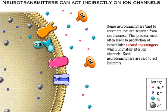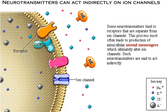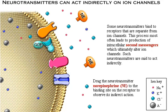Some neurotransmitters bind to receptors that are separate from ion channels. This process most often leads to production of intracellular second messengers, which ultimately alter ion channels. Such neurotransmitters are said to act indirectly. Drag the neurotransmitter norepinephrine to the binding site on the receptor to observe its indirect action.